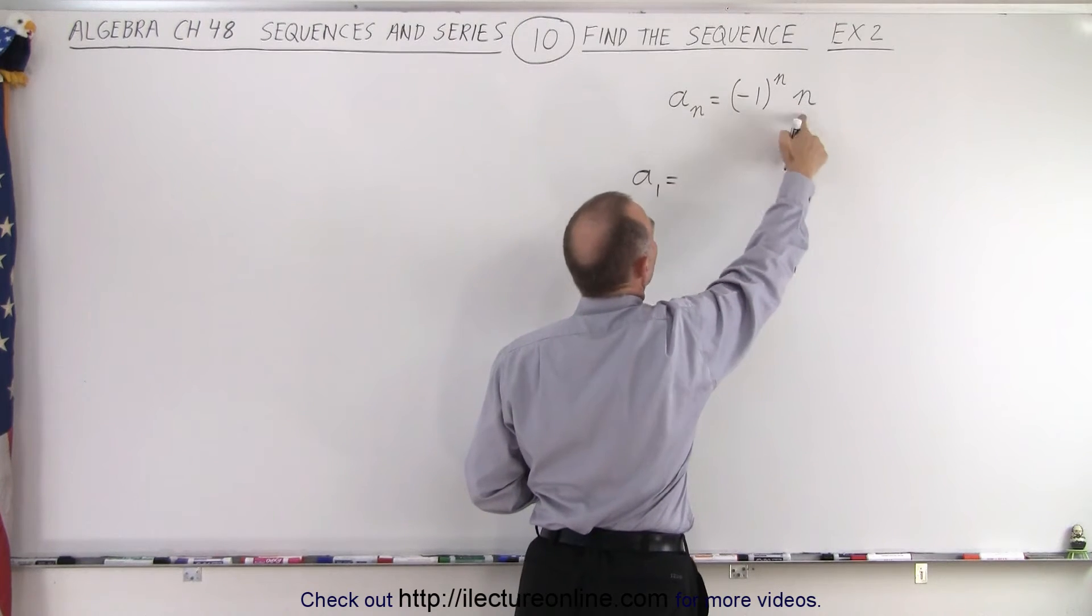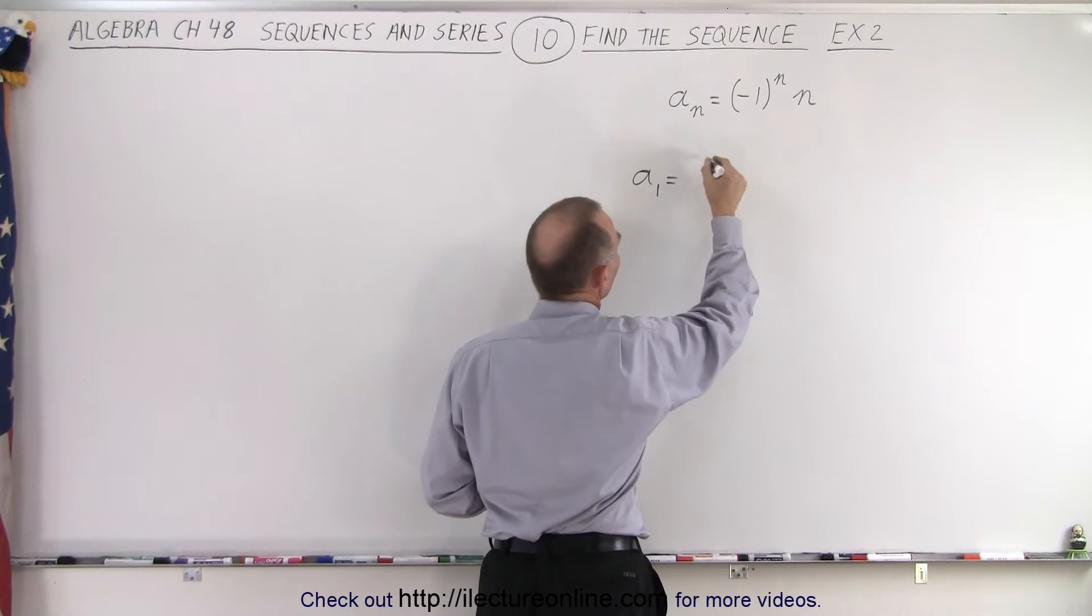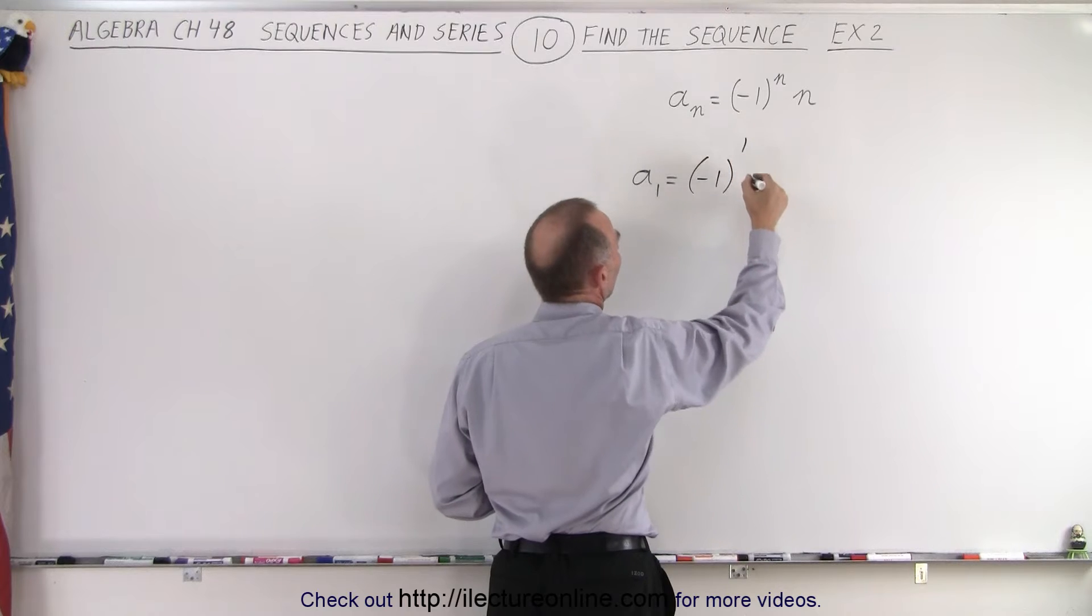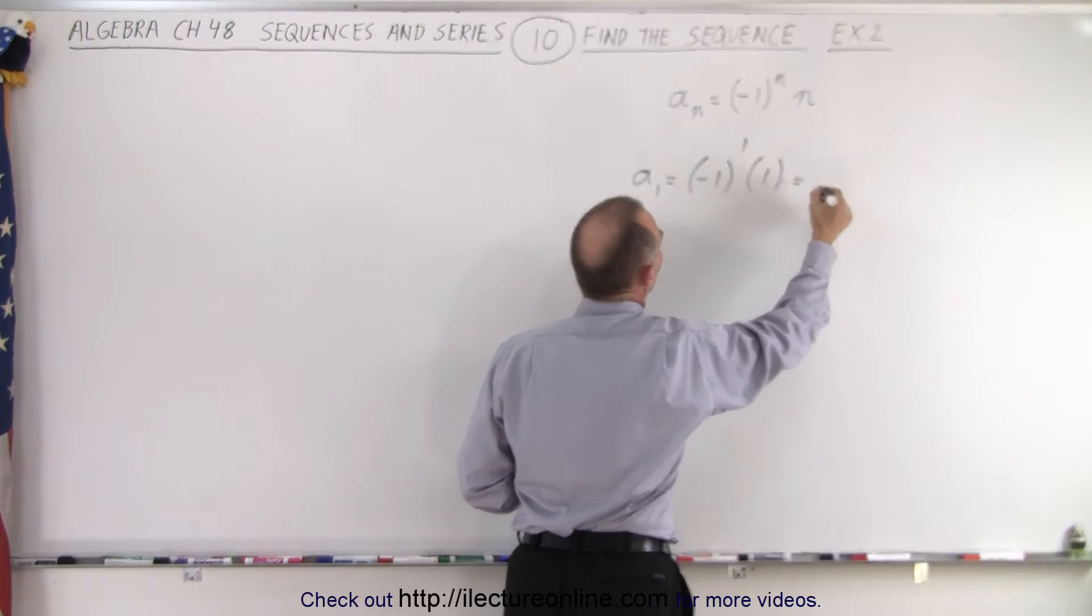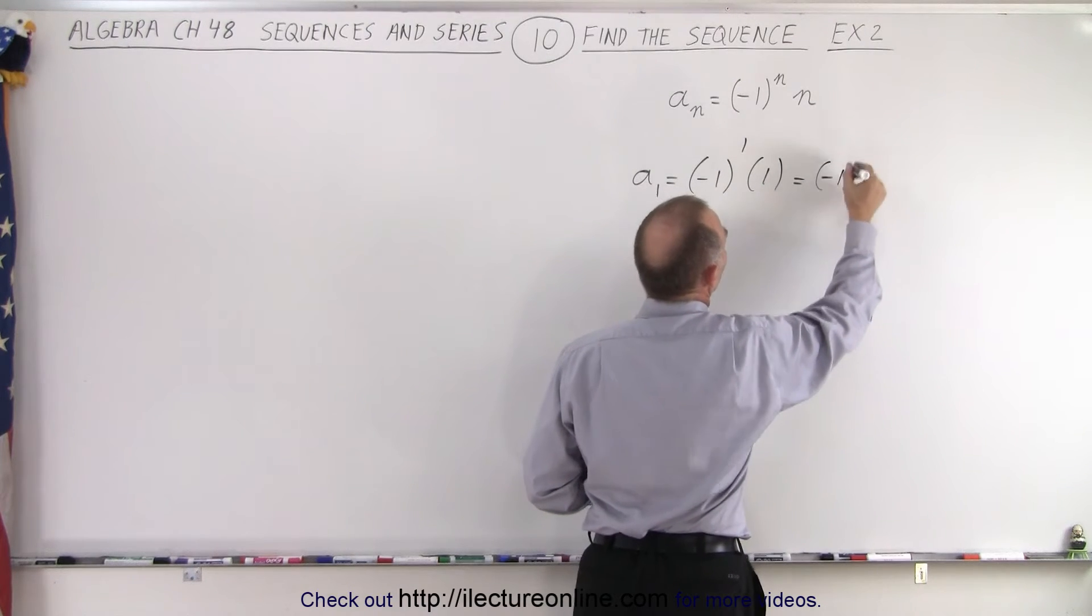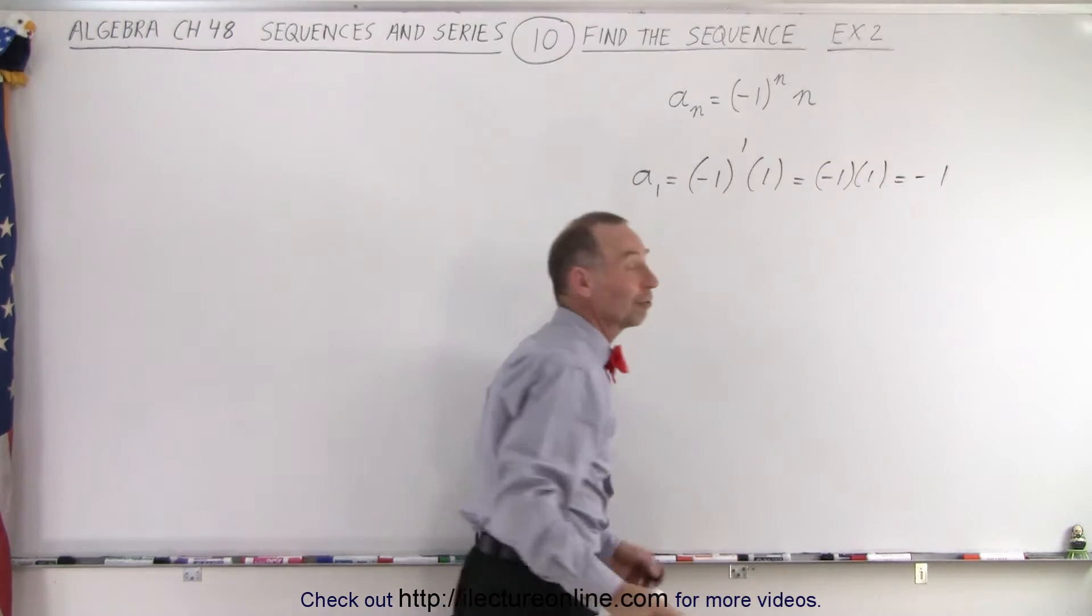We go a sub 1 is equal to all we do here is replace every n in the formula by the number one. So in this case that's minus one to the first power times one, which is going to be minus one times one, which is negative one. So that's the first number in the sequence, the first term.